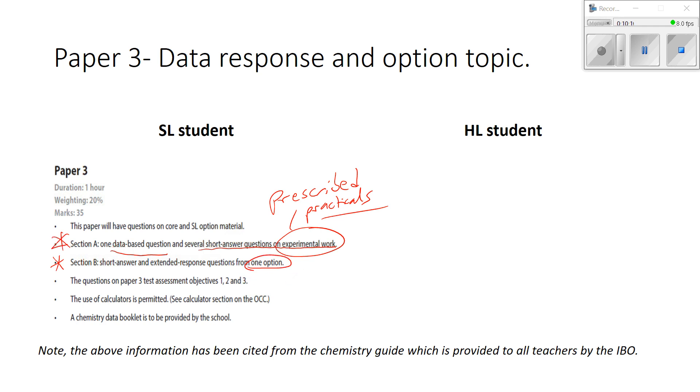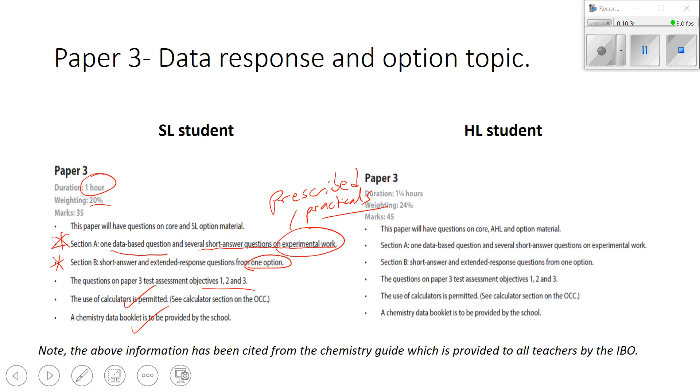Section B, then, is where you talk about your option, the four options to choose from. And we'll talk about those four options in detail later in another video. But effectively, you choose one option and you prepare yourself for it and then answer your questions on that option. Again, we're trying to cover objectives one, two and three. You're allowed to use a calculator and you have a chemistry data book available to you as well. One hour paper if you're standard level with a weighting of 20%. Whereas if you're higher level, it is an hour and 15 minutes paper with the other 24% weighting going for that. And then the same information there for a higher level student.